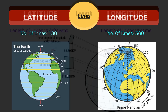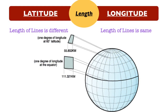The next difference is on length. The parallels of latitude are of unequal lengths but the longitudes are all of equal lengths. Due to the geoid shape of earth there is a difference between lengths of latitudes. In the image you can see that one degree of longitude at the equator gives us a distance of 111 kilometers, while one degree of longitude at 60 degree latitude gives a distance of only 55 kilometers.